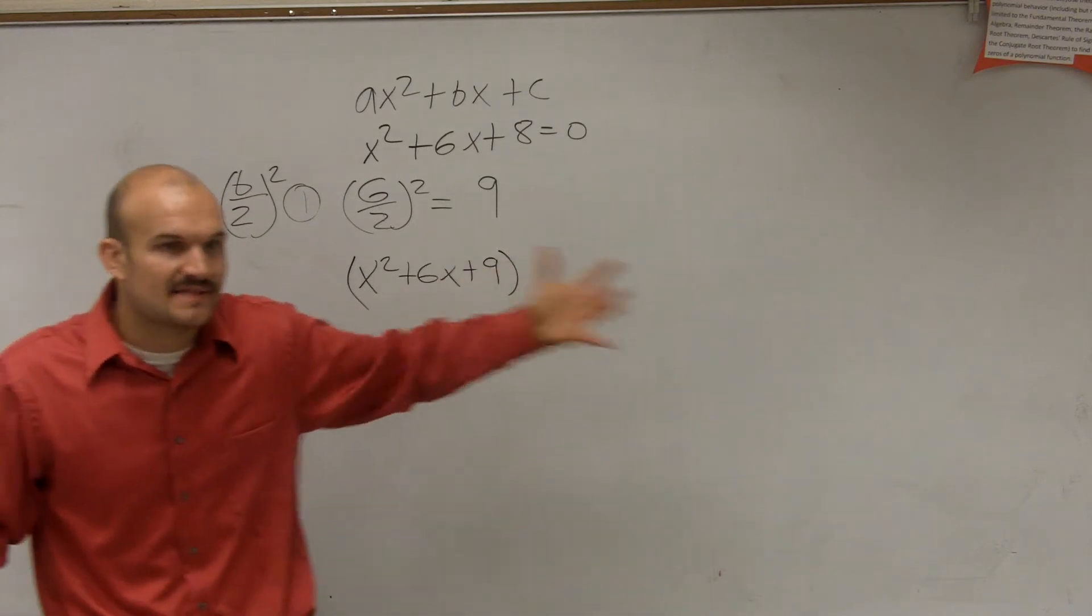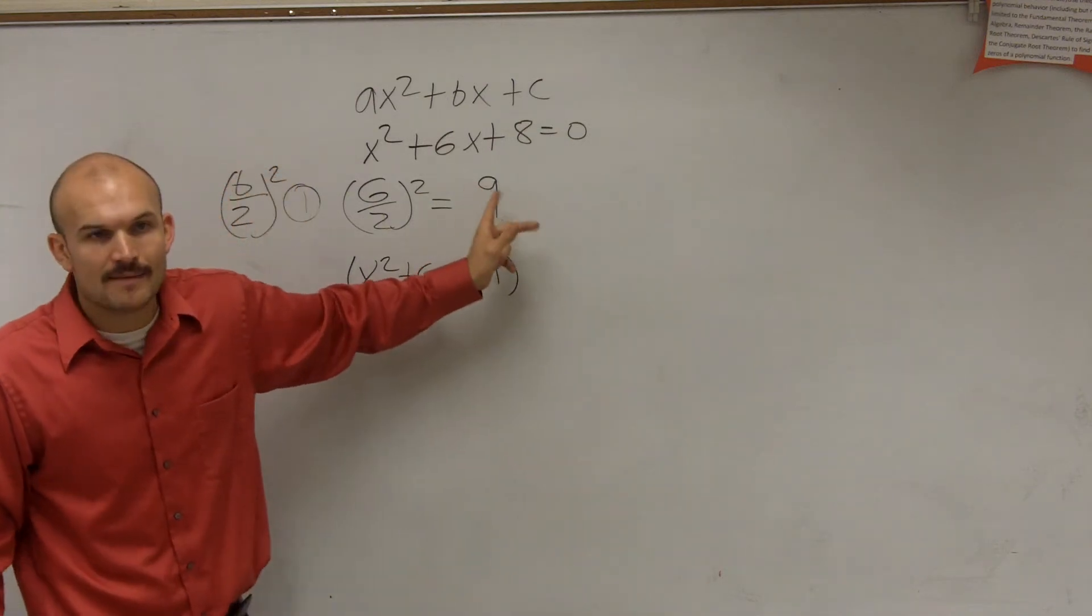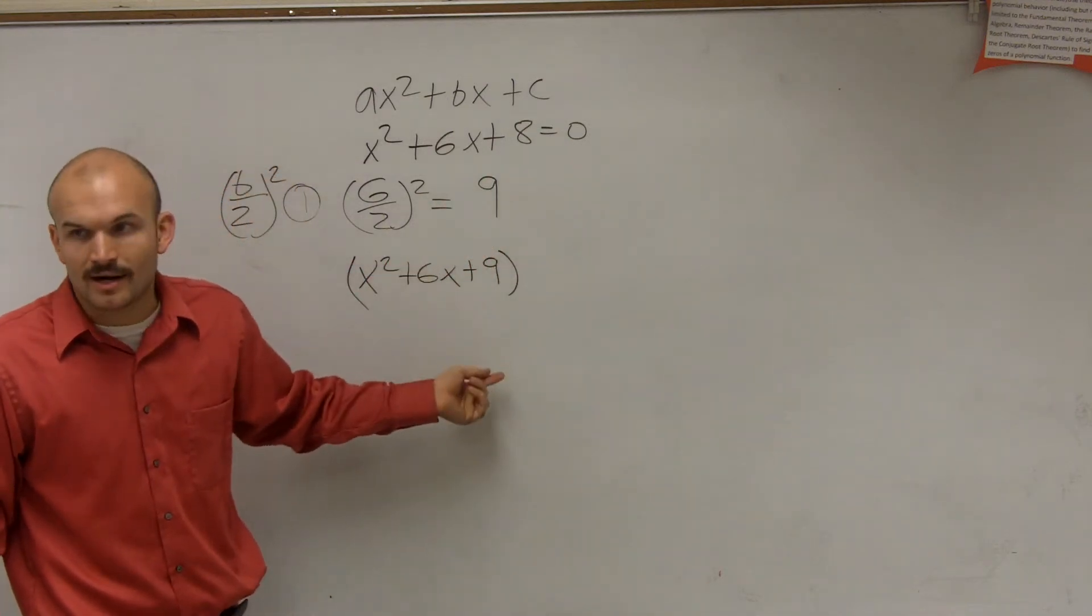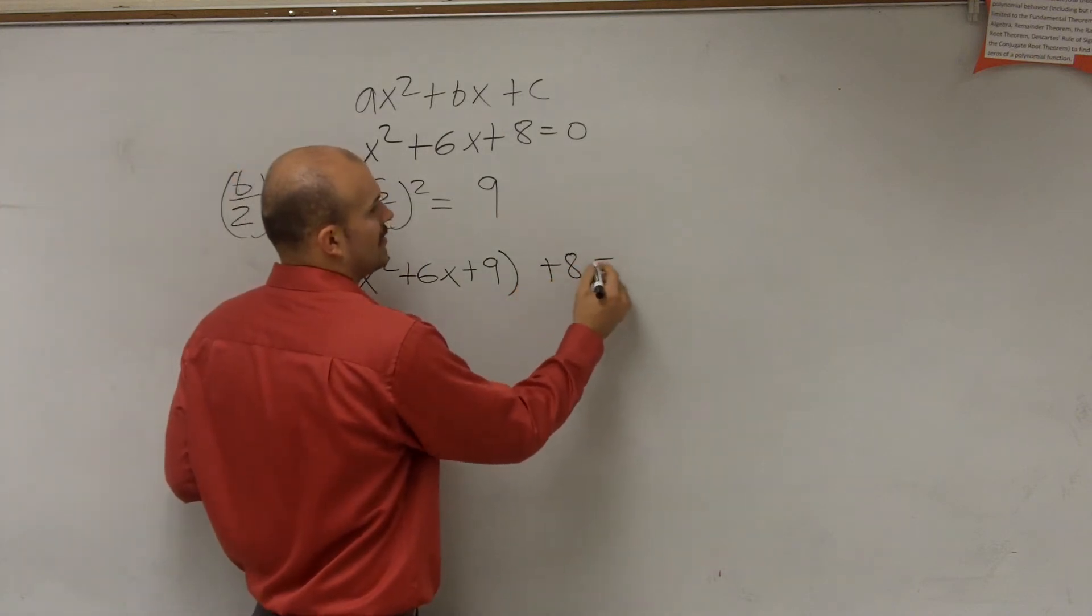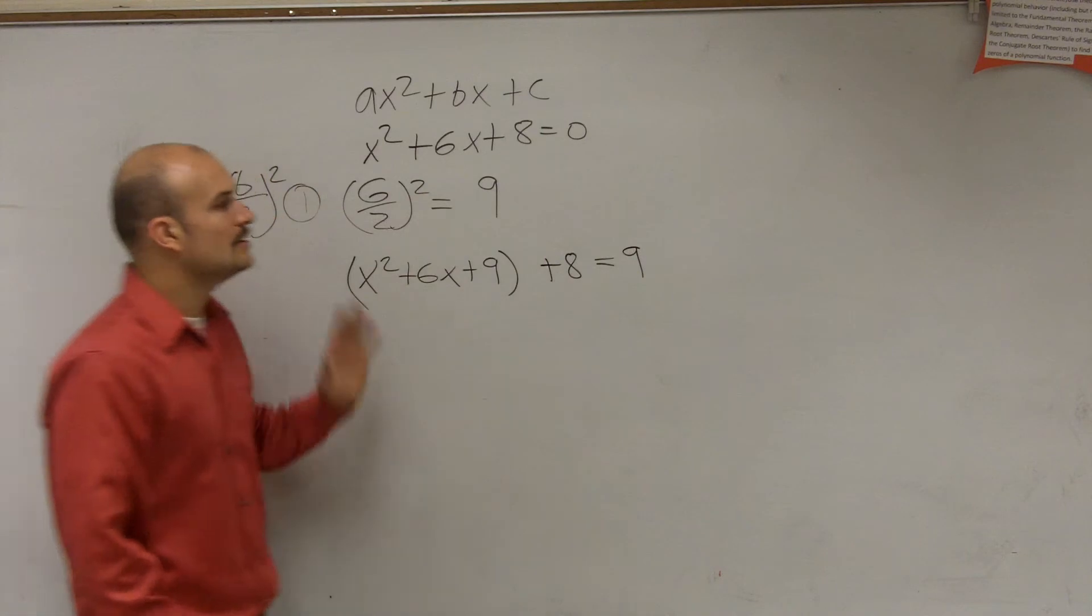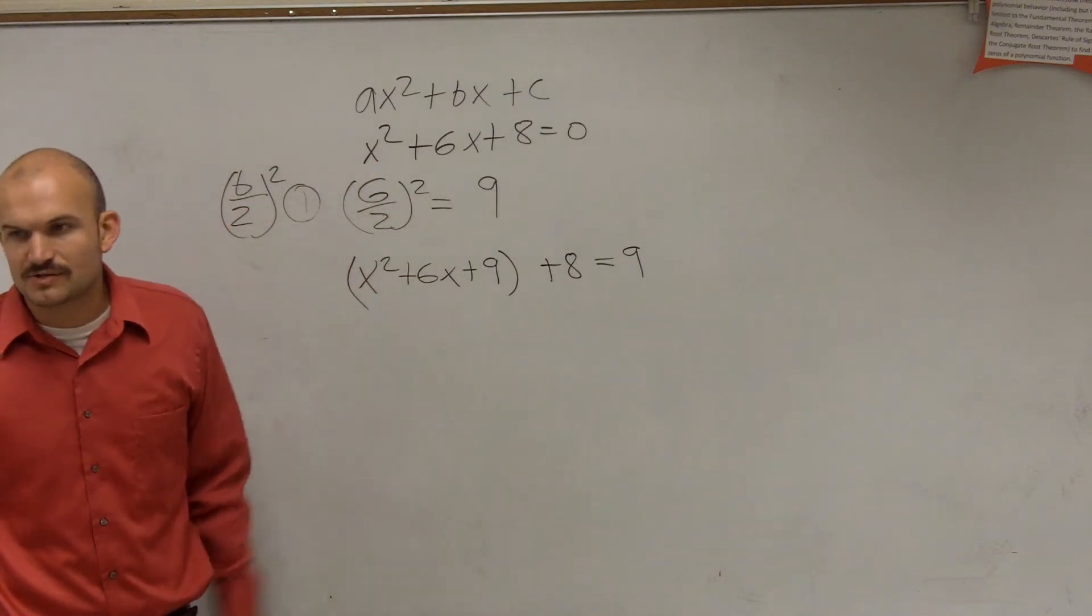Remember when I said find the value c that makes your perfect square? That's why we want this 9 because that now makes a perfect square. So then we're going to leave the 8 out and remember whatever you do on one side, you have to do on the other. So, this is a perfect square. Well, what perfect square is it?